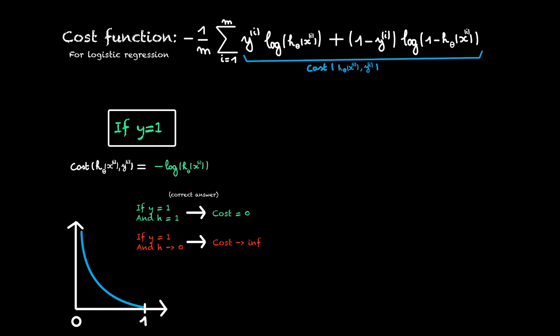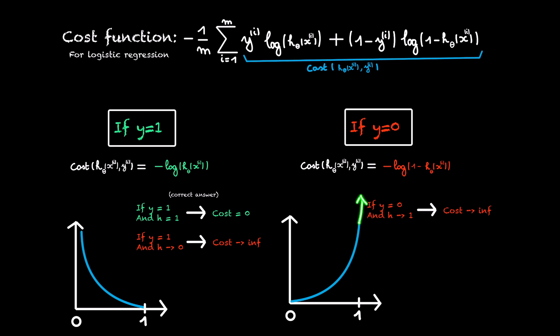For the other case, y is equal to zero, we follow the exact same reasoning. Only now, when our model predicts that y is 1, but the label of the training data is 0, we give it a very high cost. And when we predict it is 0, and the label tells us it's 0, our model is correct, thus we give it a cost of 0.